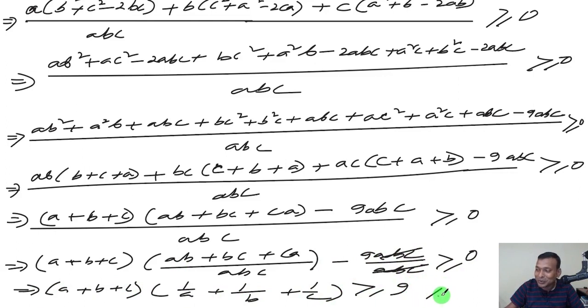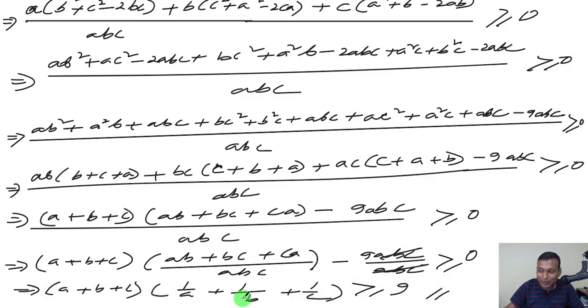So this is our proof. We have proved that (a + b + c)(1/a + 1/b + 1/c) ≥ 9. It is very simple.